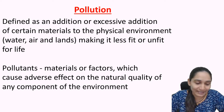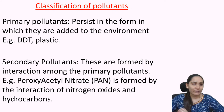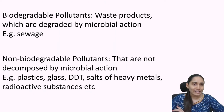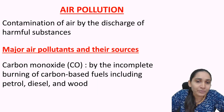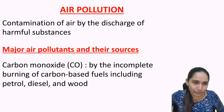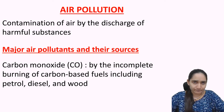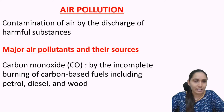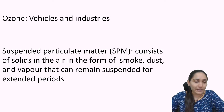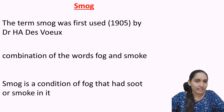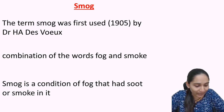We were discussing pollution. We covered the classification of pollutants — primary pollutants, secondary pollutants, quantitative, qualitative, biodegradable, non-biodegradable. Yesterday we also discussed air pollution and the major air pollutants and their sources — carbon monoxide, carbon dioxide, chlorofluorocarbons, lead, ozone, SPM (suspended particulate matter), sulfur dioxide, nitrogen oxide, etc.